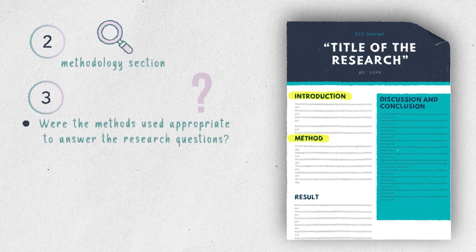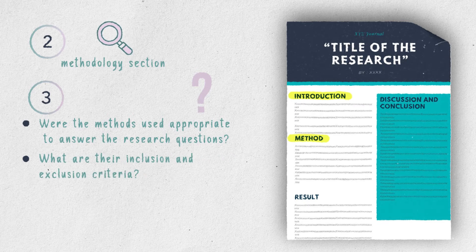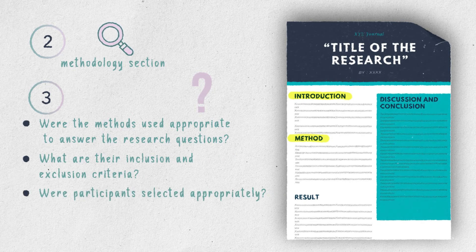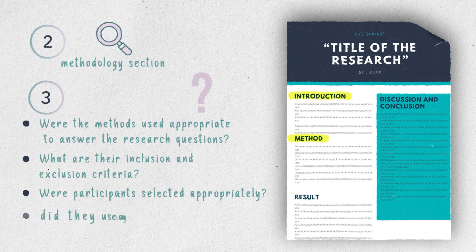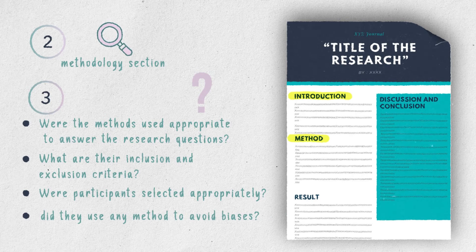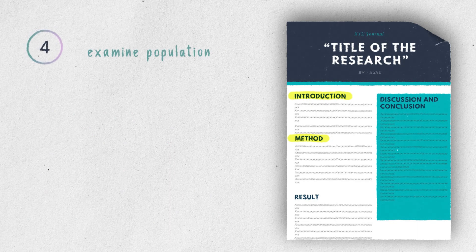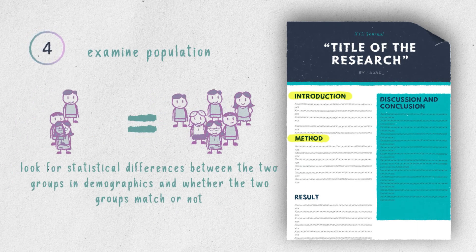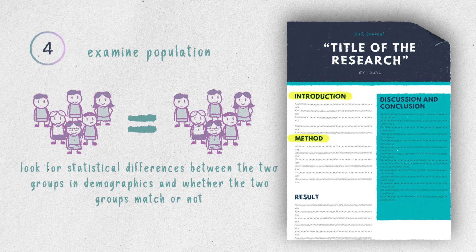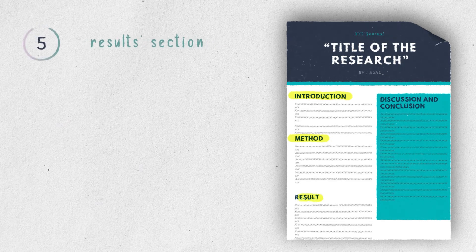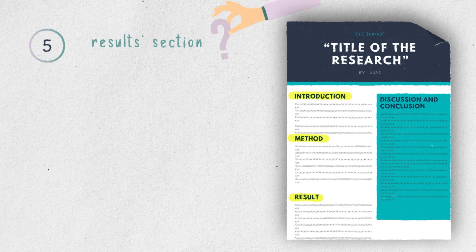Was the method used appropriate to answer the research question? What are the inclusion and exclusion criteria? Were the participants selected appropriately? Did they use any method to avoid biases? Step 4 is to examine the included population — look for statistical differences between the two groups in demographics, and whether the two groups match or not.